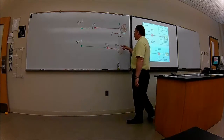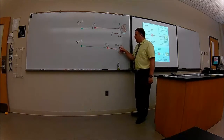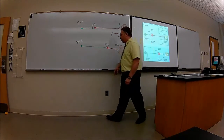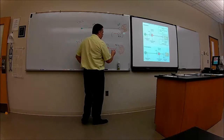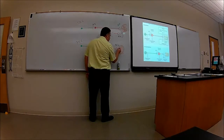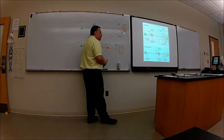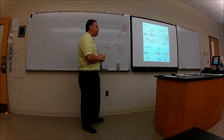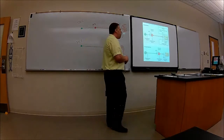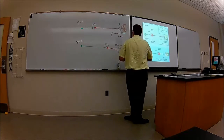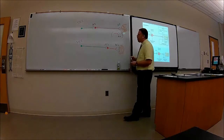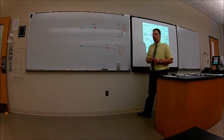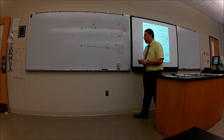There is acetylcholine at the parasympathetic target organ too, but there are different receptors there. The receptors at the target organ for the parasympathetic are going to be muscarinic.